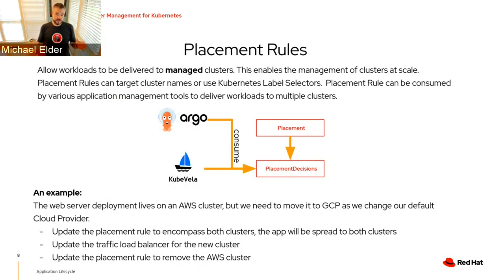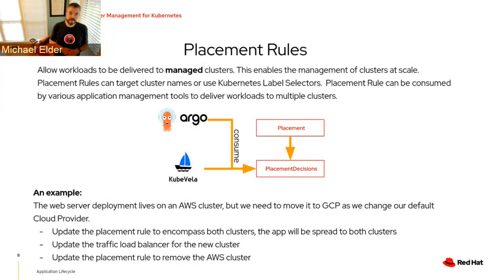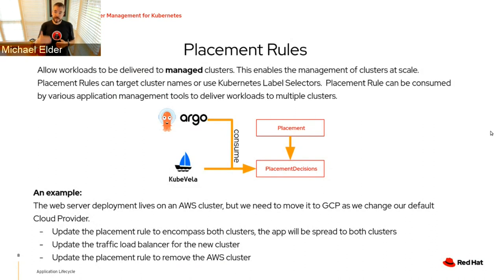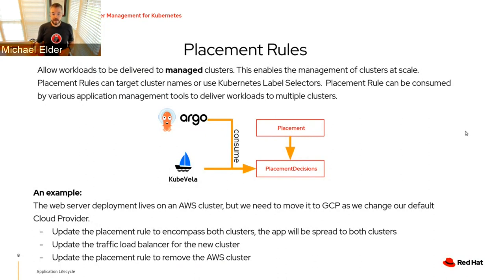If three clusters are spread across regions and one experiences a catastrophic region failure, it's no longer eligible, but the placement rule means we'll pick another cluster in another region that matches, rolling out the application with the desired configuration there. Placement rules are building blocks that any project can consume. In the Argo community, members of our team are working with the community to extend the application set concept to understand placement through a Kubernetes concept called duck types, allowing Argo to leverage capability from a cluster manager.